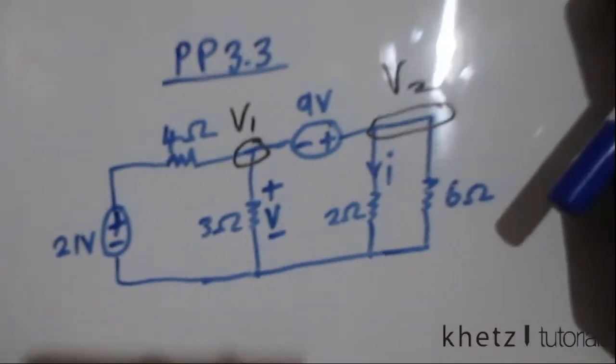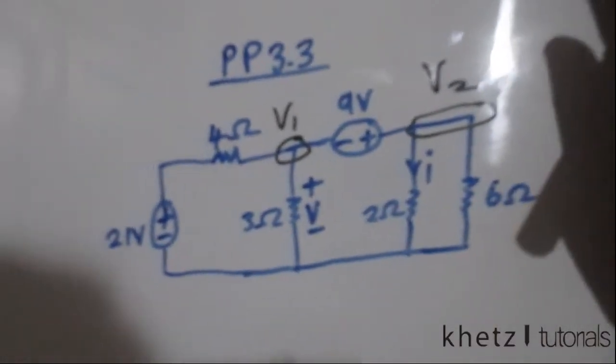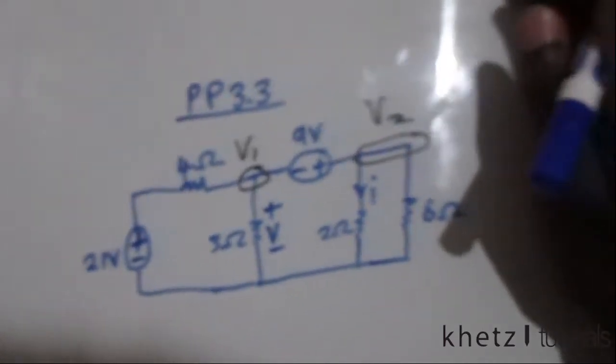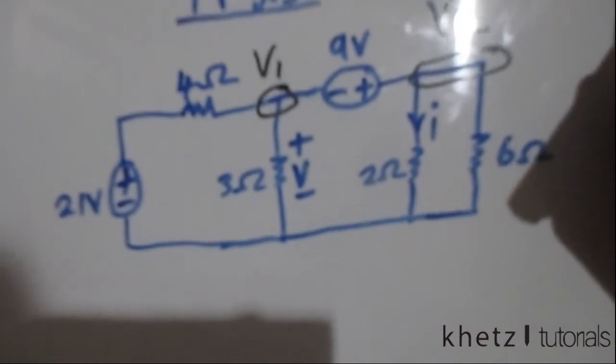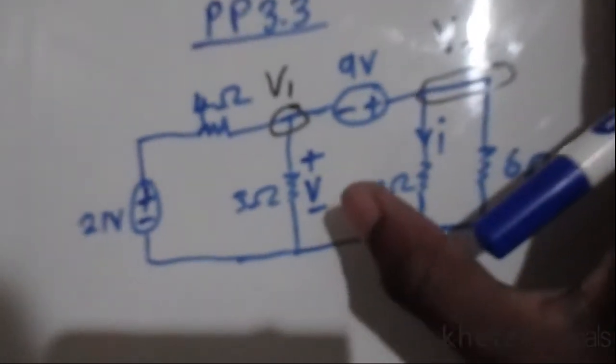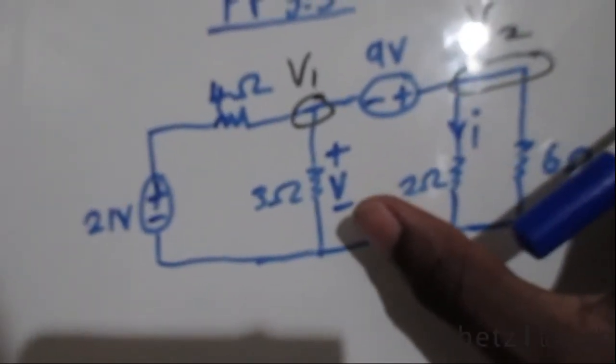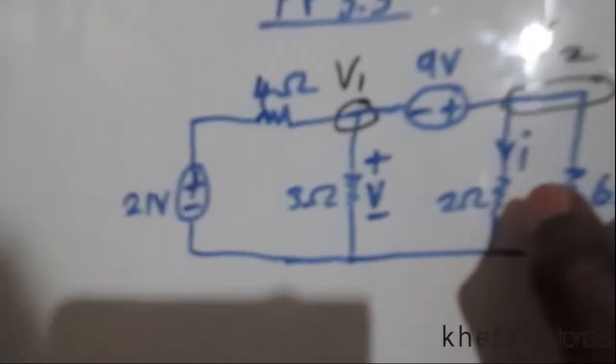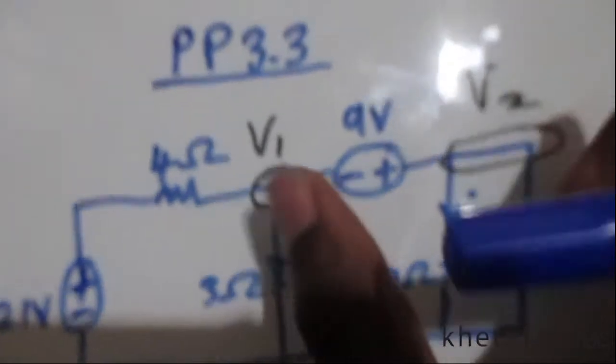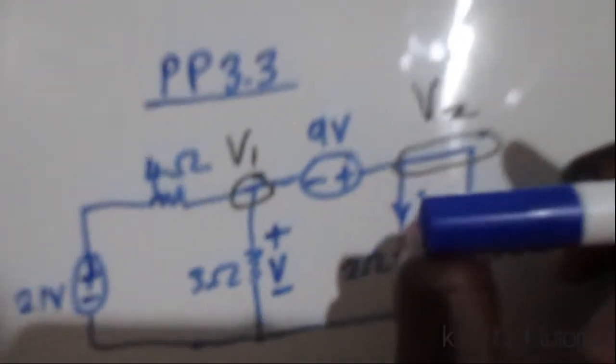Welcome to CAT Tutorials. In this video I'll be solving practice problem 3.3. The question says we should find v and i, so v is across the 3 ohm resistor and i is across the 2 ohm resistor. I labeled these two nodes as v1 and v2 for convenience.